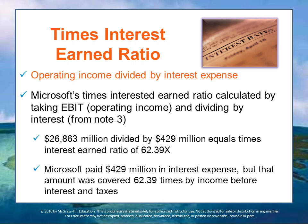The times interest earned ratio equals operating income divided by interest expense. It's a measure of the safety margin a firm has with respect to making interest payments to its creditors. A low times interest earned ratio indicates that even a small decrease in a company's earnings may lead to the company finding itself in very difficult financial straits, being unable to make their debt payments.